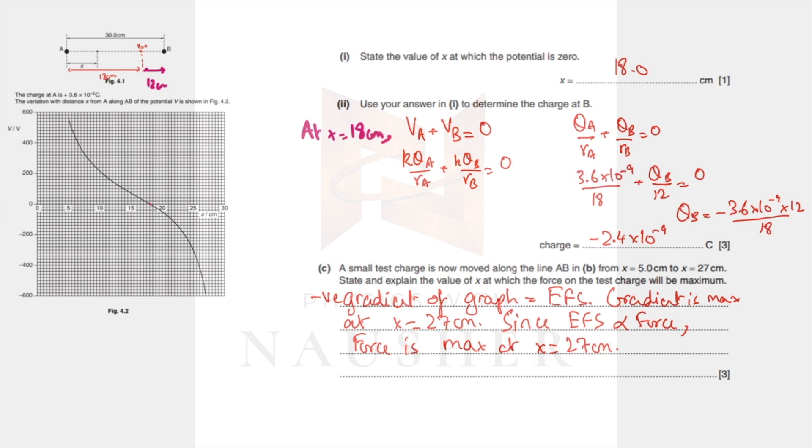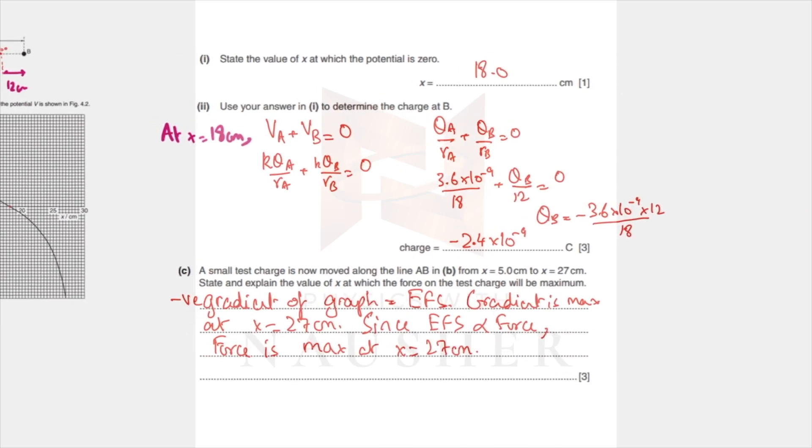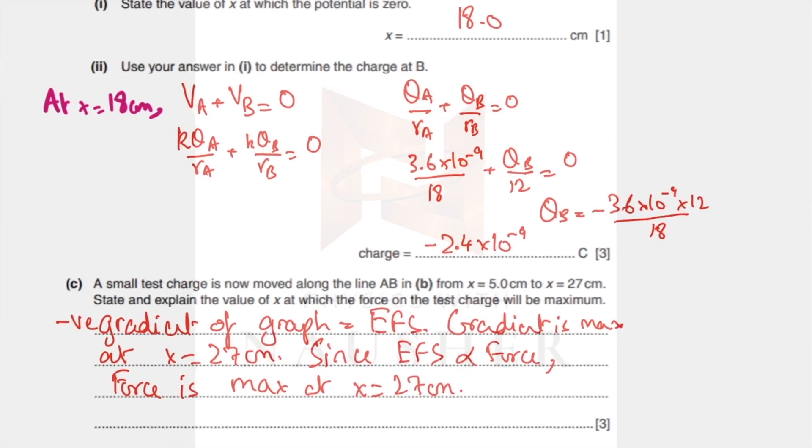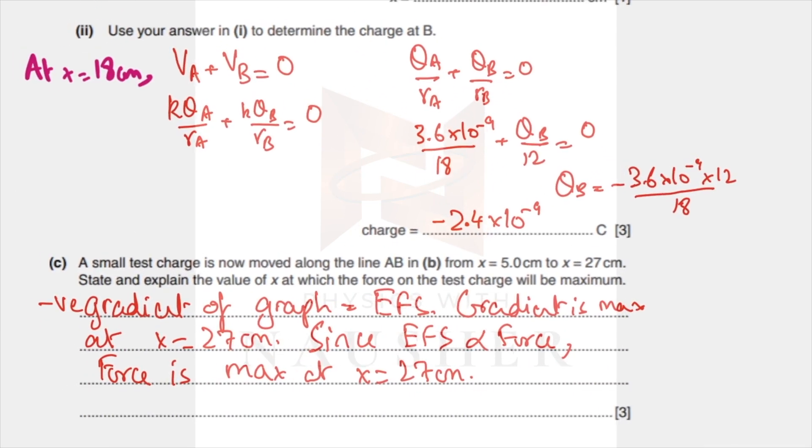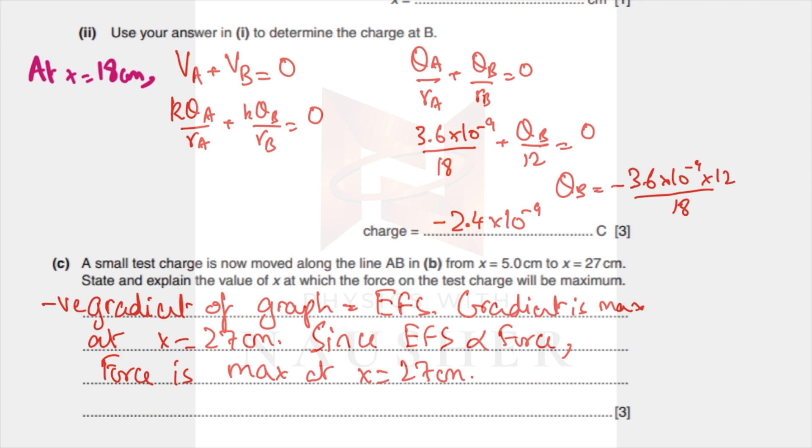Charge A is 3.6 times 10 to minus 9, so you put 3.6 times 10 to minus 9. You cross multiply by taking QB to this side, so it'll become minus QB over 12. Then cross multiply: 12 into 3.6 times 10 to minus 9 with a minus sign, divide by 18, and the charge will be minus 2.4 times 10 to minus 9.